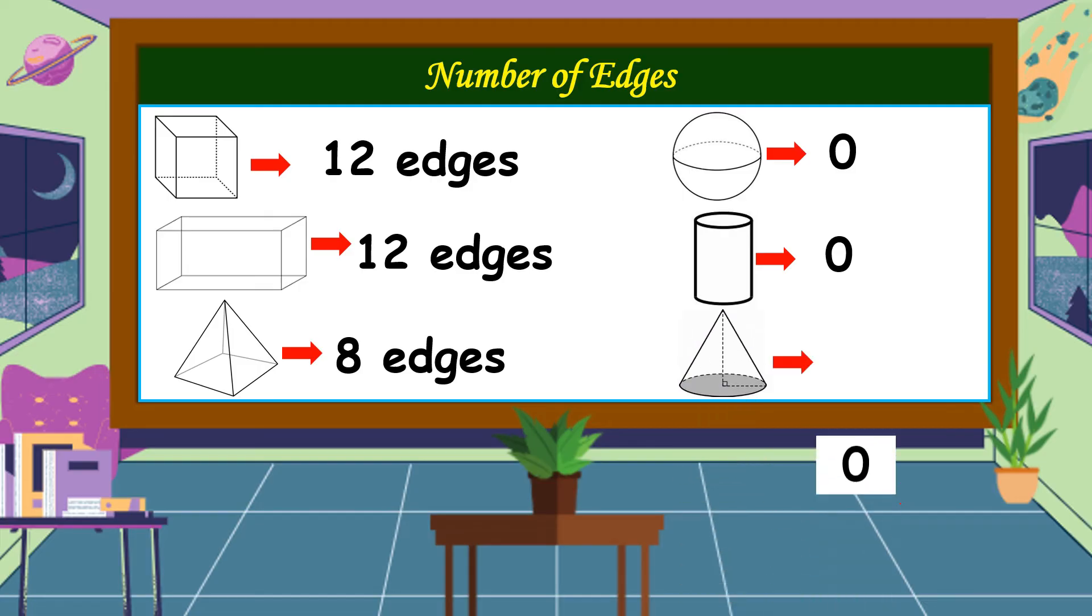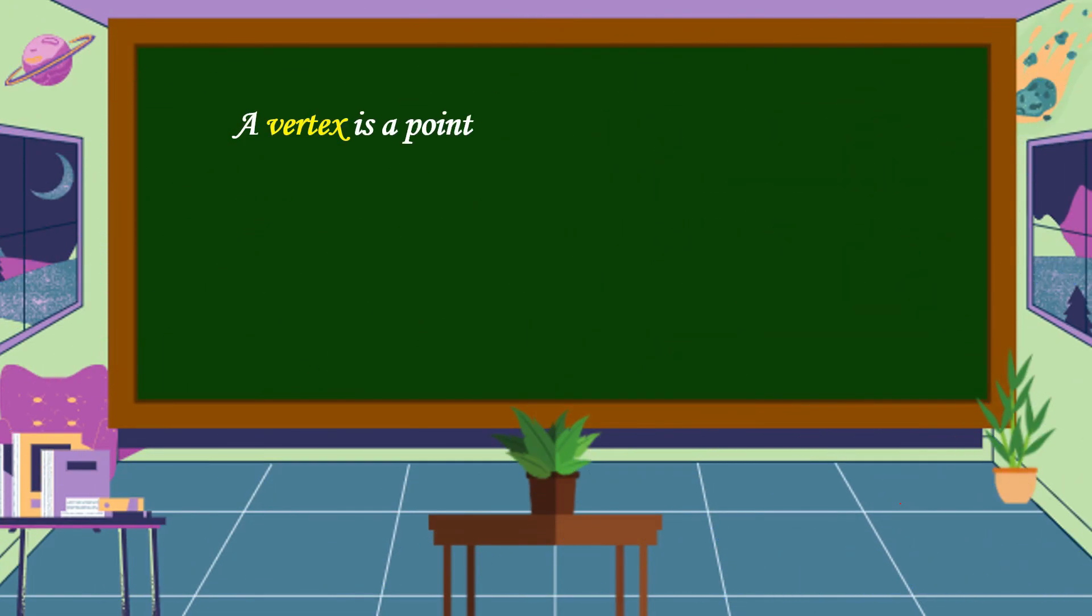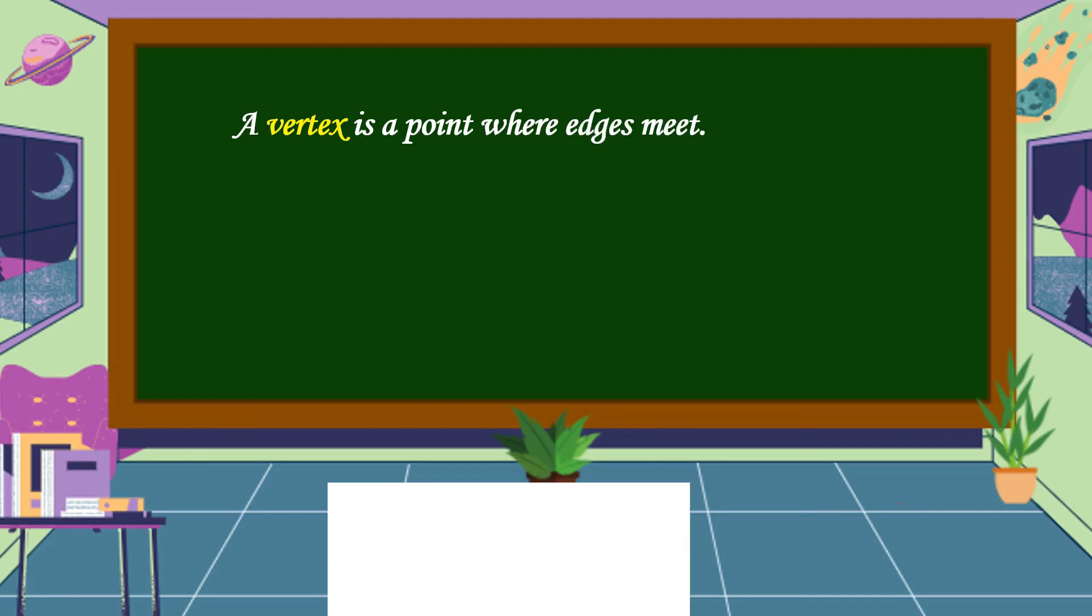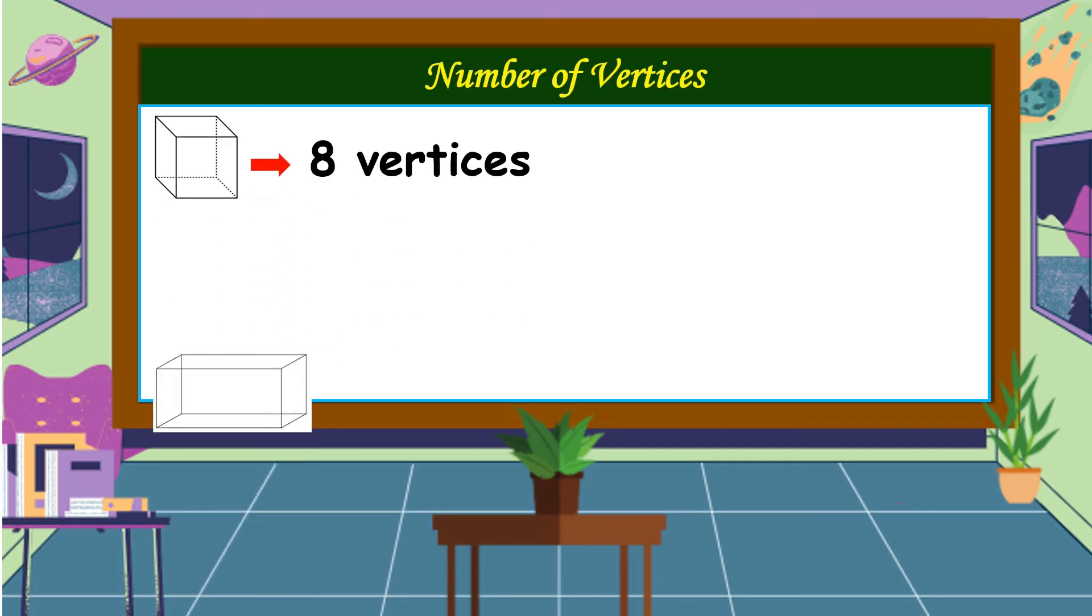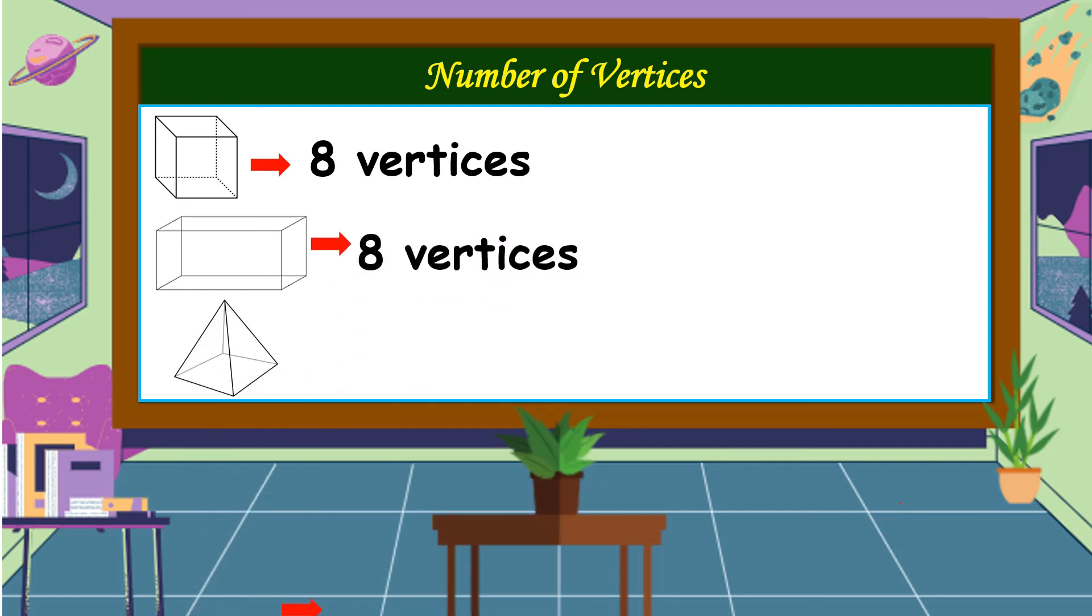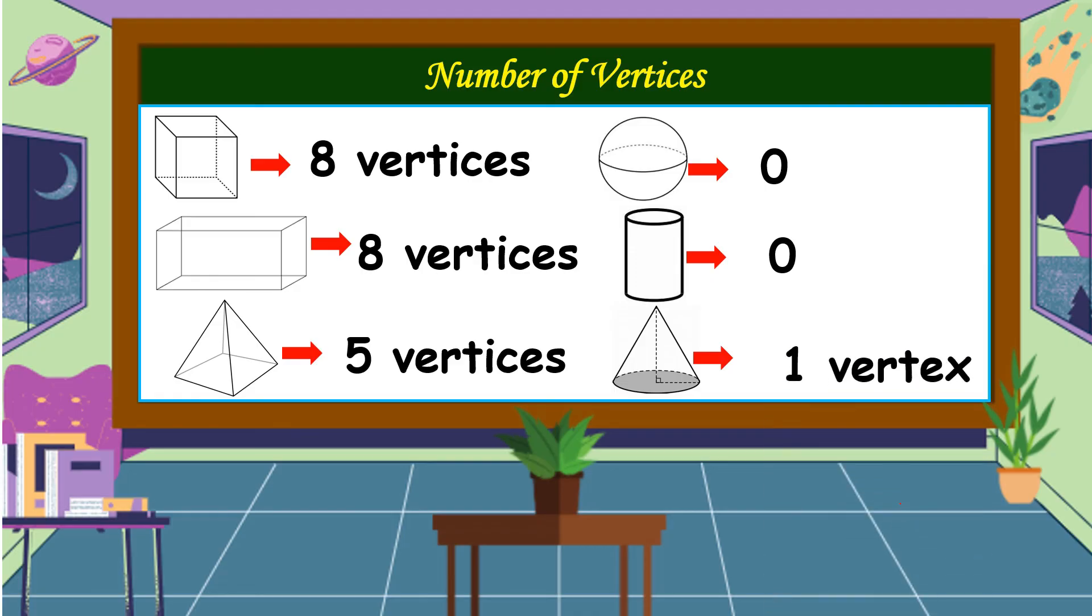A vertex is a point where edges meet. This is the vertex. Let's count the number of vertices of each solid figure. A cube has eight vertices, a rectangular prism has eight vertices also, a pyramid has five vertices. A sphere is zero, a cylinder is zero, and a cone has one vertex.